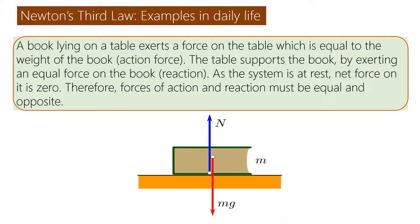Newton's third law examples in daily life: a book lying on a table exerts a force on the table which is equal to the weight of the book (action force). The table supports the book by exerting an equal force on the book (reaction). As the system is at rest, net force on it is zero. Therefore, forces of action and reaction must be equal and opposite.